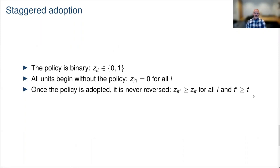So the policy starts at 0 for all units, and then it switches to 1 when each unit adopts the policy. Once a unit adopts the policy, it stays adopted for the entire time range we observe.